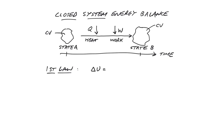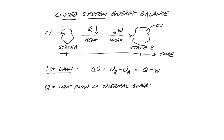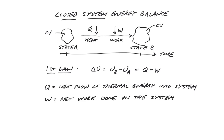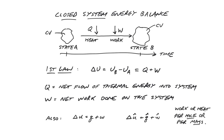According to the first law, the energy of the universe — defined as an isolated system — cannot change. This implies that the total change in internal energy of the system, UB minus UA, must equal Q plus W, where Q is the net flow of thermal energy across the system boundary from the surroundings into the system, defined as heat, and W is the net flow of mechanical or other coherent forms of energy from the surroundings into the system, defined as work. Since in thermodynamics we are usually interested in intensive properties, and since for a closed system the mass or number of moles is fixed, this statement is often recast in intensive form, with lowercase q and w representing molar or mass-specific heat and work.